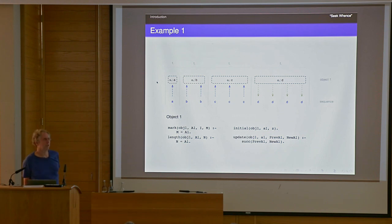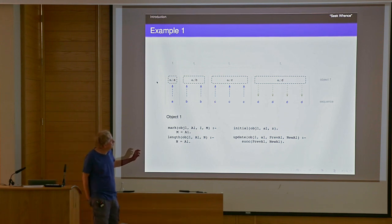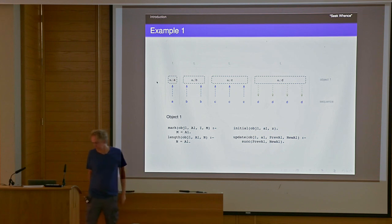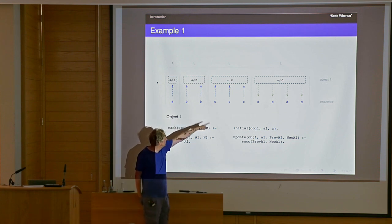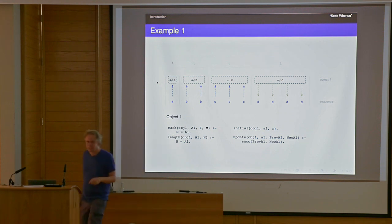The first application of ILP is a system that learns to predict the next elements in these series. But it does more than just predict — it also generates a parse, an interpretation of what's going on, and a program to explain what's going on. It constructs objects and moments in time, and constructs a logic program which explains how these objects change over time. As a side effect, it can also predict the next elements.